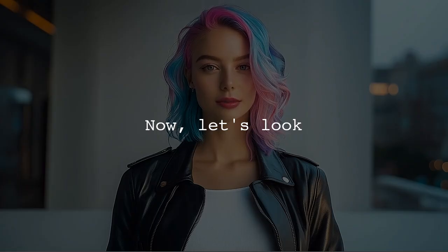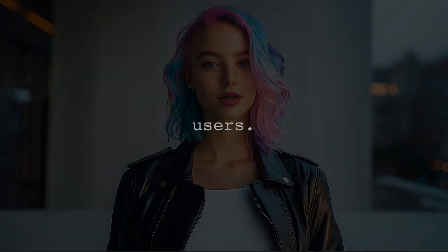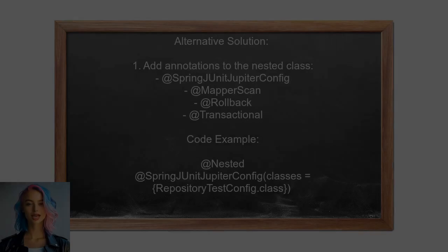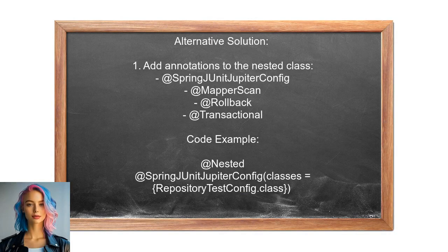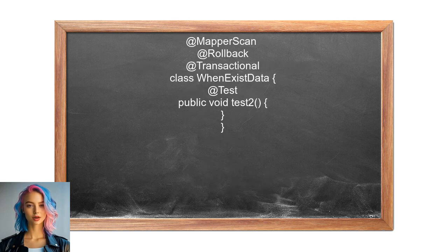Now let's look at the answers provided by other users. An alternative solution involves adding the same annotations to the nested class. They suggest using @SpringJUnitJupiterConfig, @MapperScan, @Rollback, and @Transactional within the nested class to ensure rollback functionality works as intended.